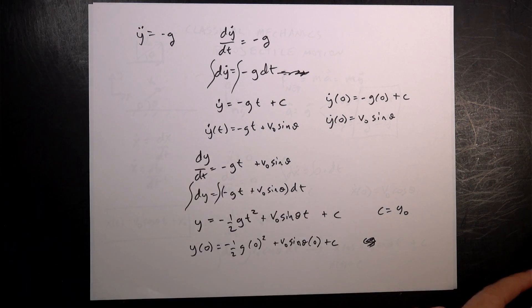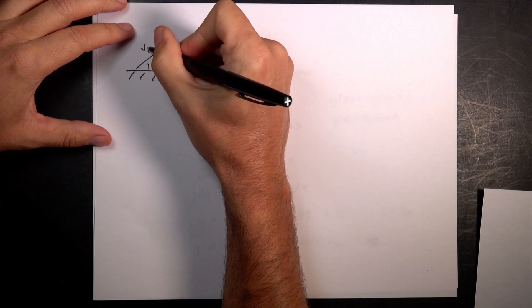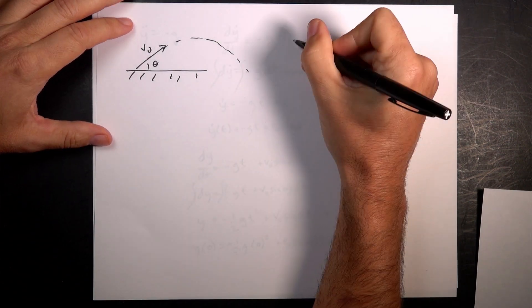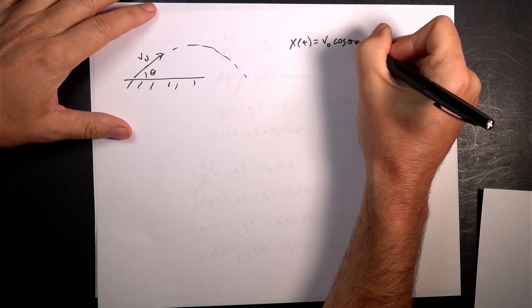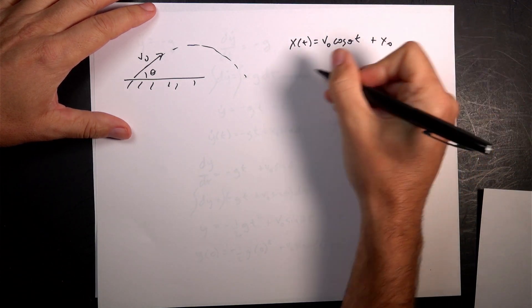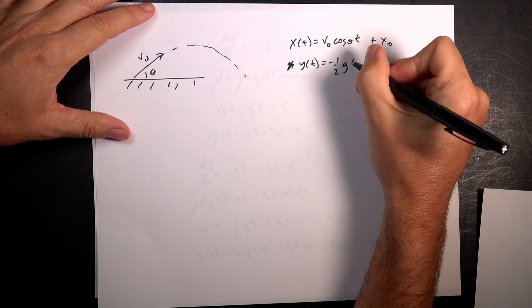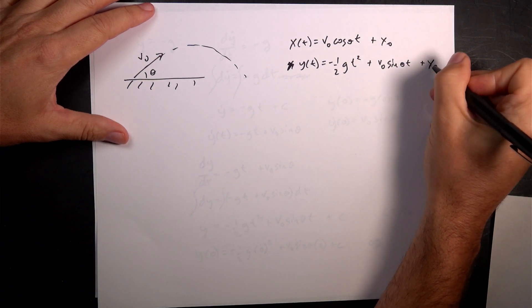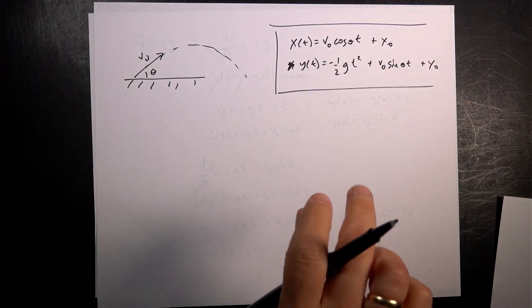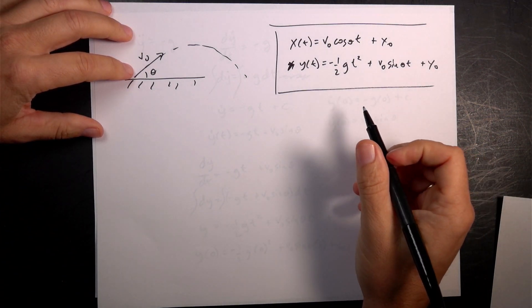So if I put those two equations together — let me draw our picture again: this is the ground, theta, v zero — I have x as a function of t equals v zero cosine theta times t plus x zero. And y as a function of t equals negative one half g t squared plus v zero sine theta times t plus y zero. Those are my equations for projectile motion, and that's the way we do it in classical mechanics.